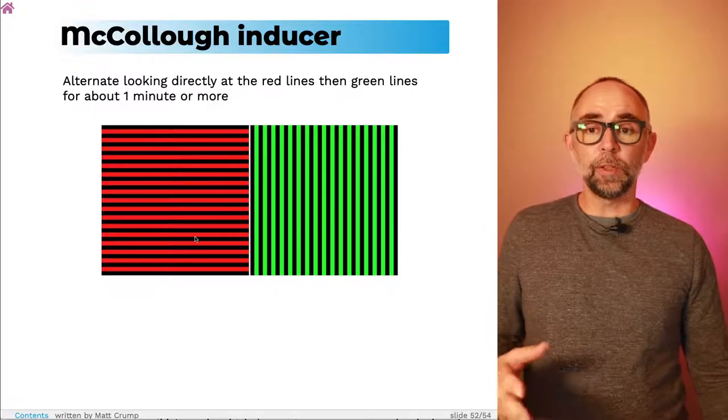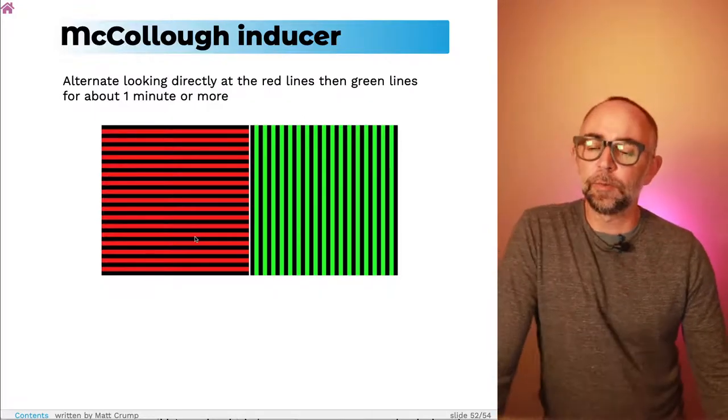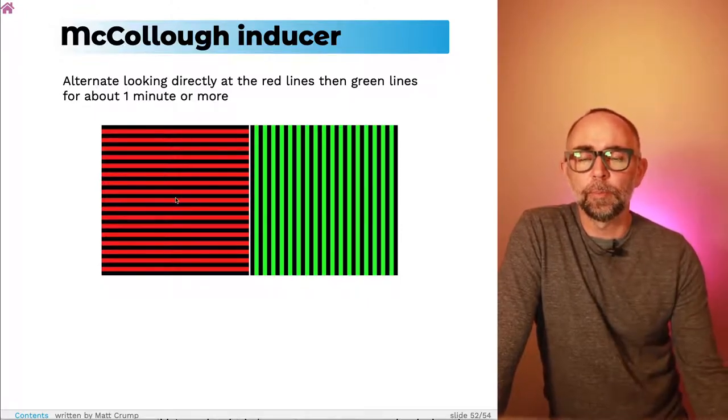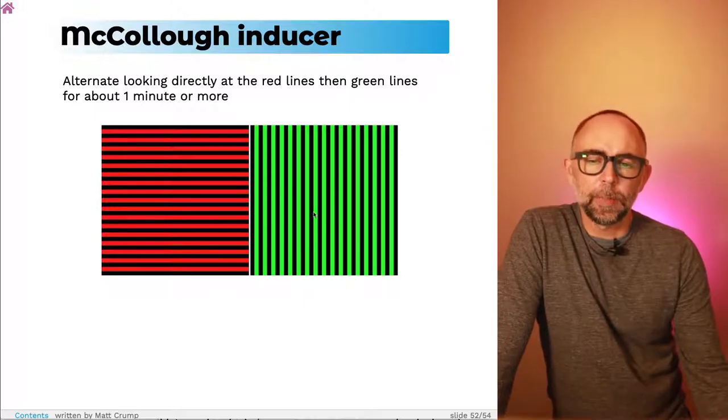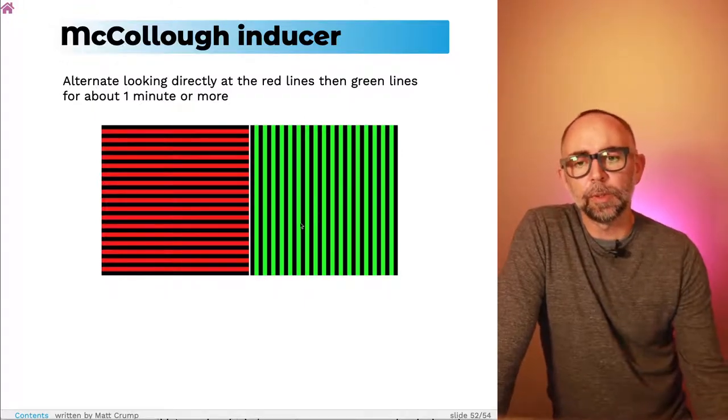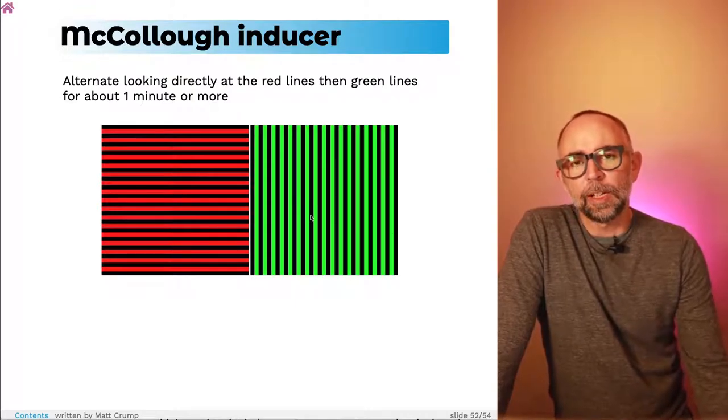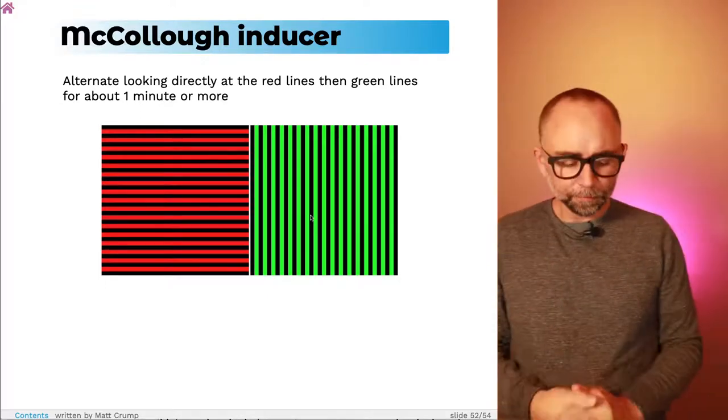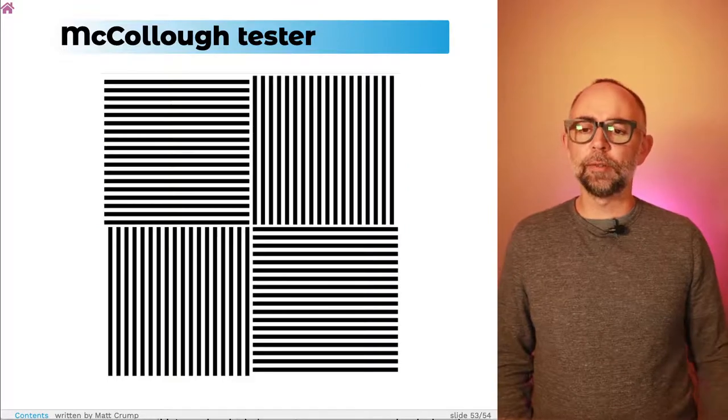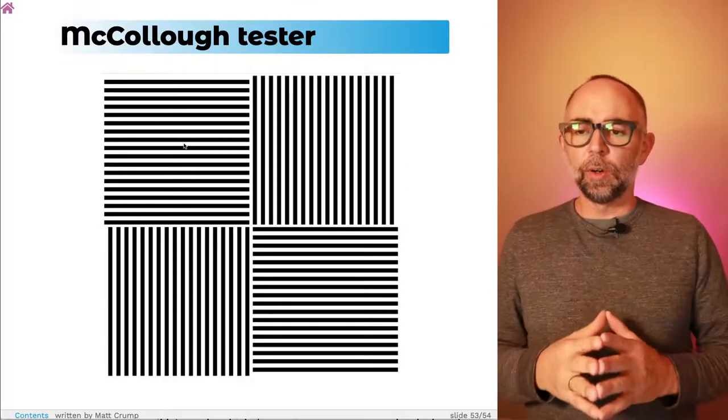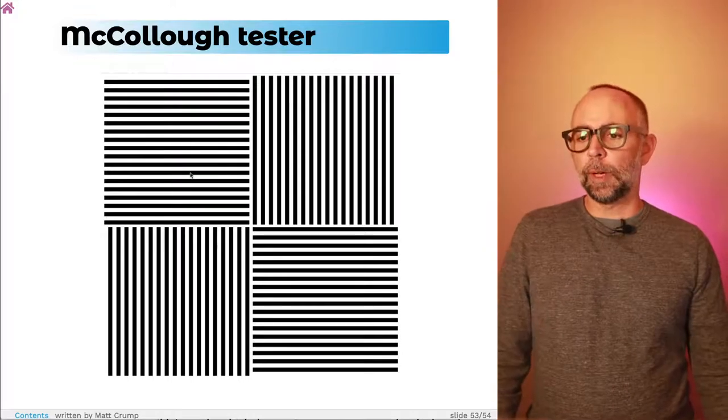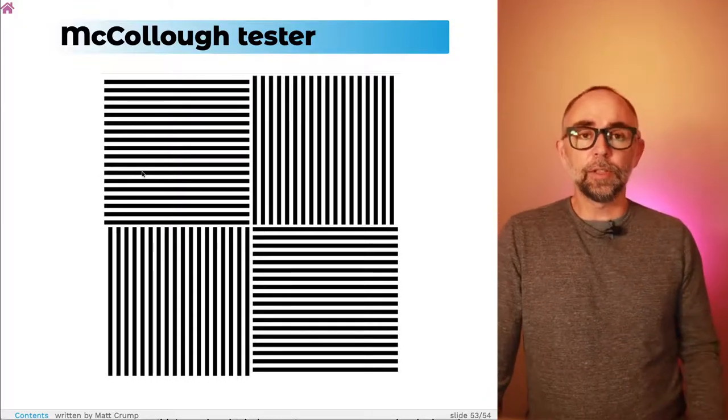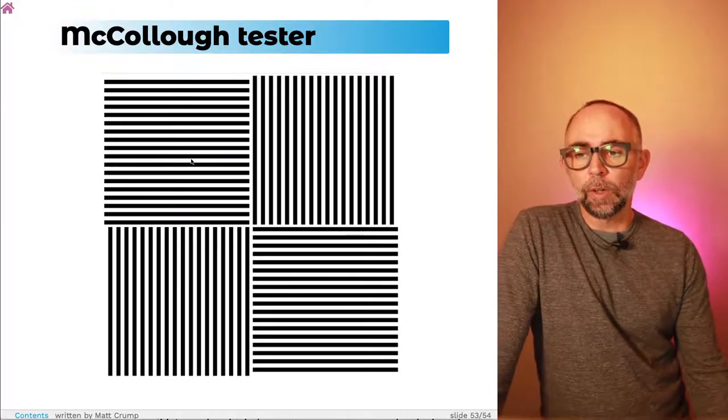What's the relation to Pavlovian conditioning? Well, what you've been doing in this procedure, the idea is you've been pairing horizontal bars with the perception of red and pairing the vertical bars with the perception of green. It's not the whole story. The way the visual system works, it has these opponent color systems. And so when you take away the red and the green, and you just show the horizontal bars, what appears to be happening is there is a learned, conditioned response at play.